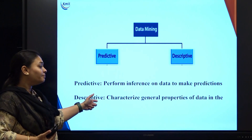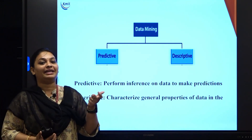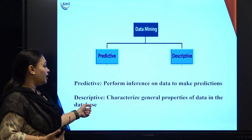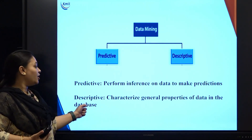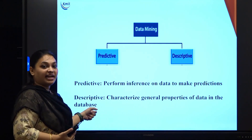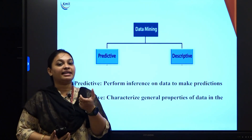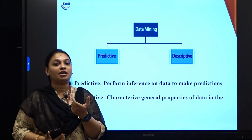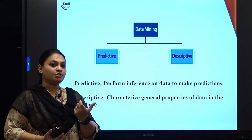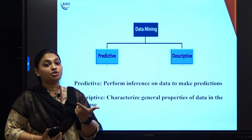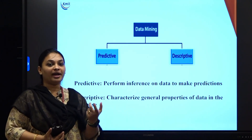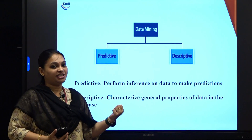What do we mean by descriptive? All the general properties of data are combined together in your database — that is your descriptive. It characterizes general properties of data in the database. For example, a college database consists of employee details, student details, and all the admin details. All together is nothing but your college database.